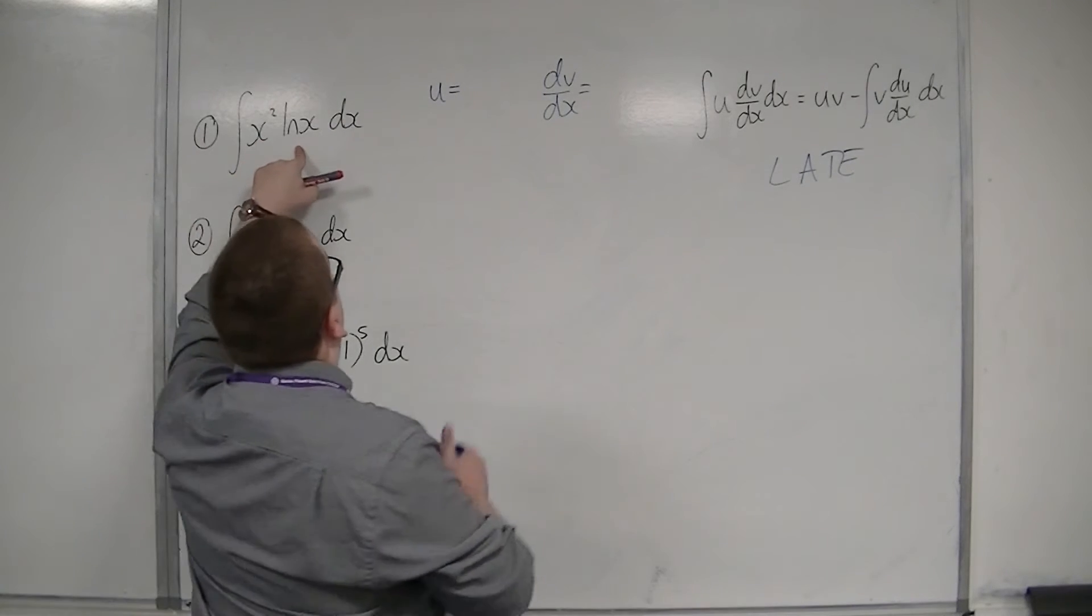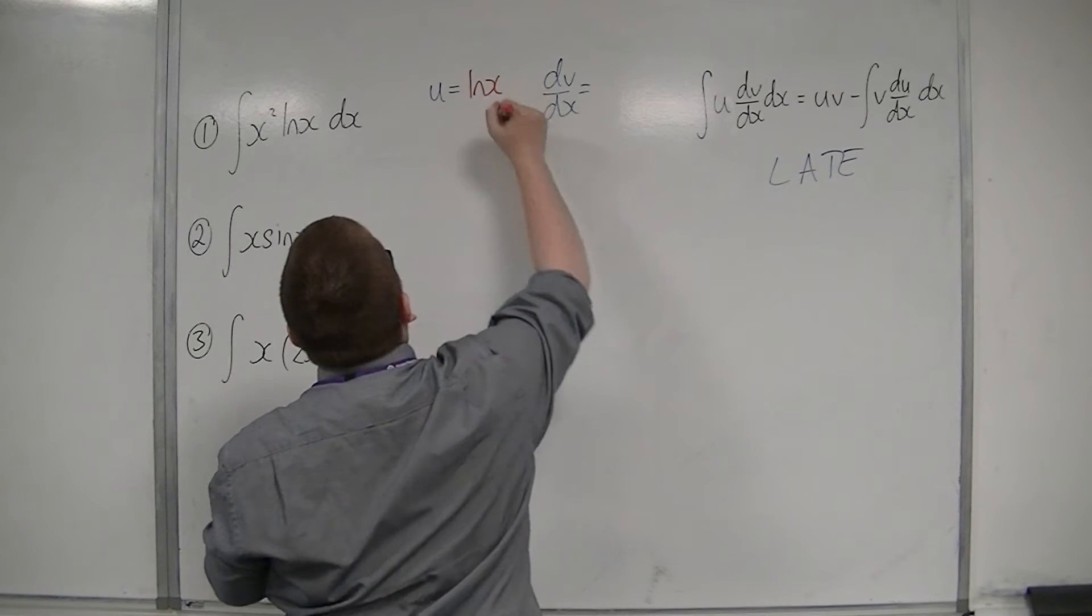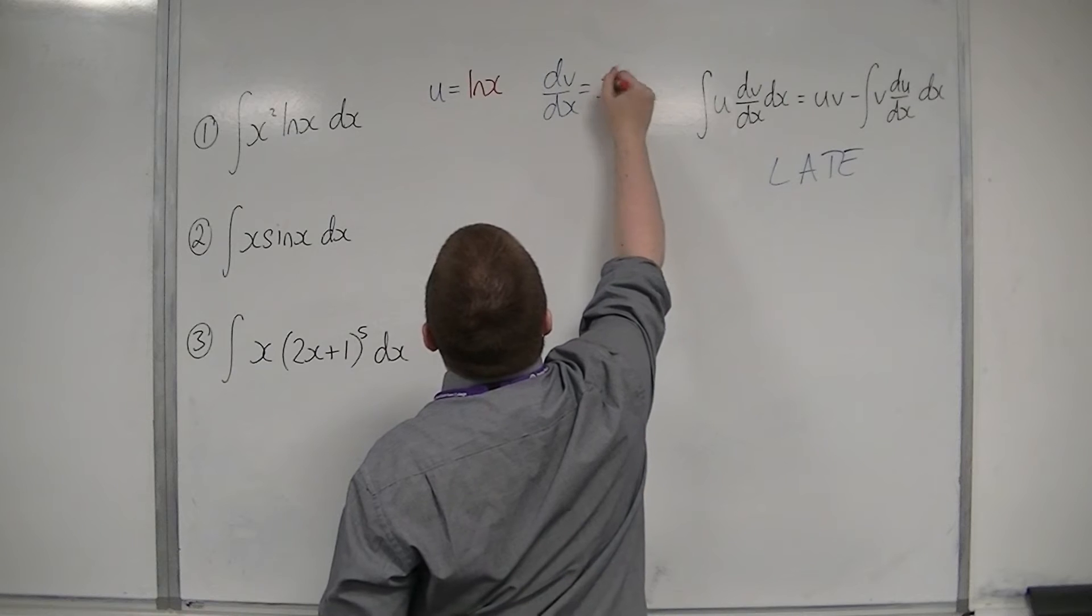And in this case there are. So log x must be u, and the dv by dx is x squared.